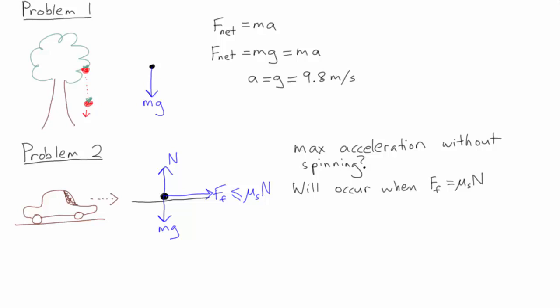This problem is more complicated than the last one because we have forces parallel to the road and forces perpendicular to the road. What we need to do is to write separate F equals ma equations in both the x and y directions. In the x direction, the only force acting is friction and so F net in the x direction is equal to mu s times n.